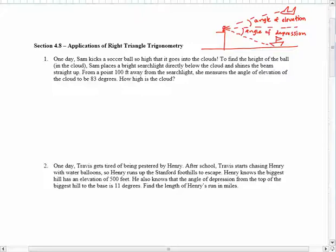Sam places a bright searchlight directly below the cloud and shines the beam straight up. From a point 100 feet away from the searchlight, she measures the angle of elevation of the cloud to be 83 degrees. How high is the cloud?